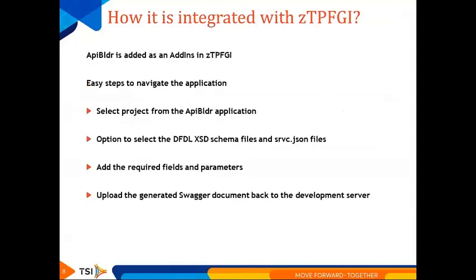API Builder has been added as an add-in in GI with easy steps to navigate to it. When you open API Builder, the list of available projects can be selected. There is an option to open the DFDL accessibility schema, and if a service.json file is already available, that can also be loaded. Once loaded, the developer can add required features and parameters, and then upload the completed Swagger document back to the development server.